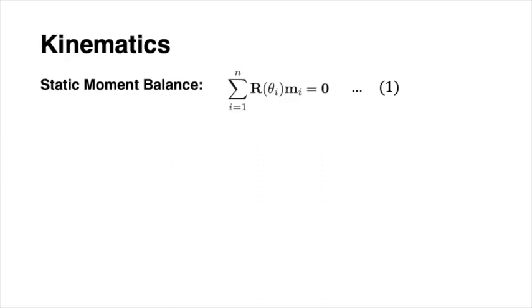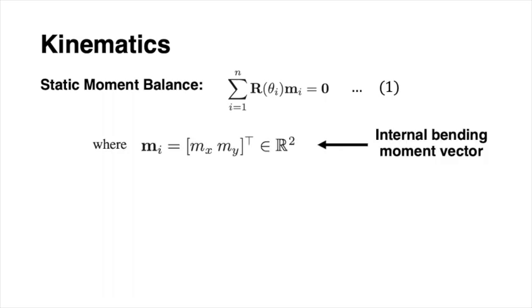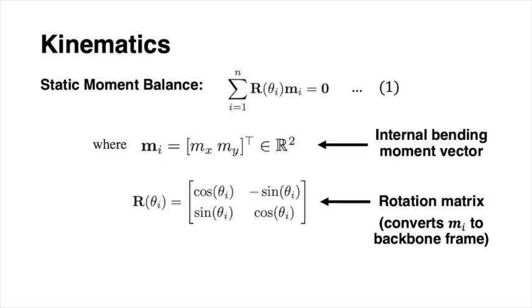In this section, we generalize a prior torsionally rigid concentric tube kinematics model framework to account for concentric structures that can exhibit direction-dependent flexural rigidity. The kinematics can be derived by analyzing the static moment balance each concentric tube applies to one another. M is defined as the internal bending moment vector. The rotation matrix is applied to each moment to convert the moment from the local material frame of a bellows to the central backbone frame of the robot. Theta is the axial rotation of the i-th bellows at its base.